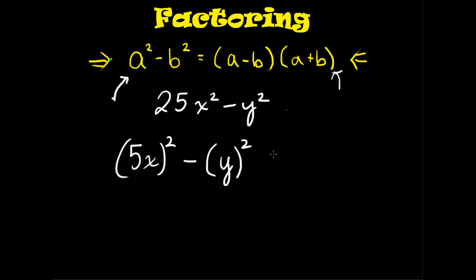Just y squared. Now that it's in this form, all we have to do from there is, this is a and this is b. Substitute them for the right hand of the difference of two squares identity. So first you have 5x minus y times the quantity 5x plus y.